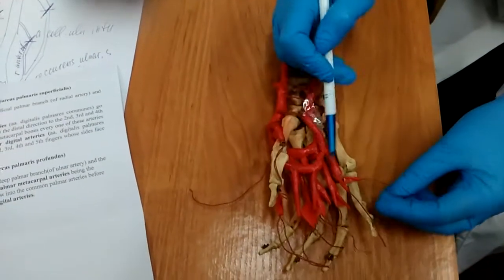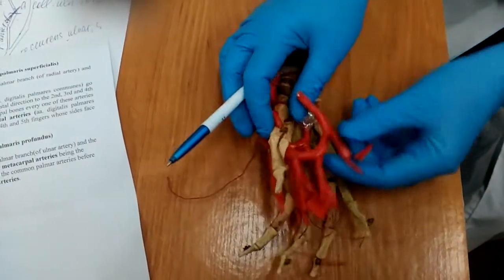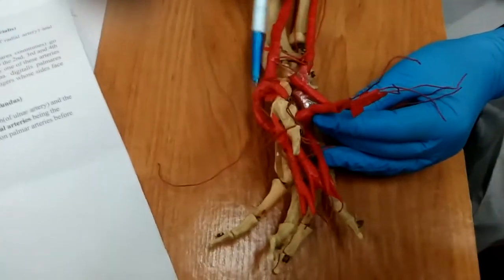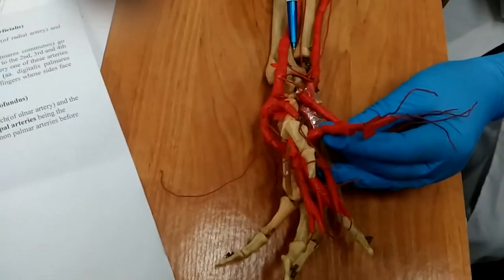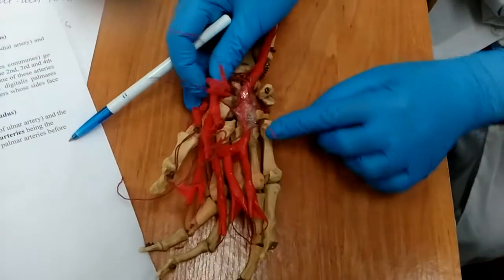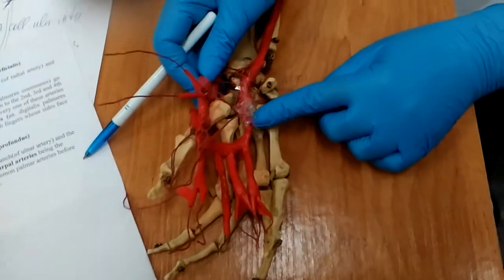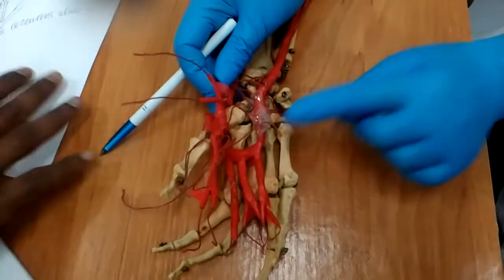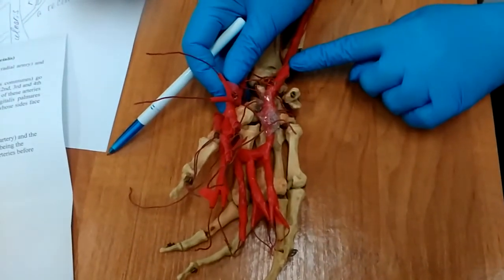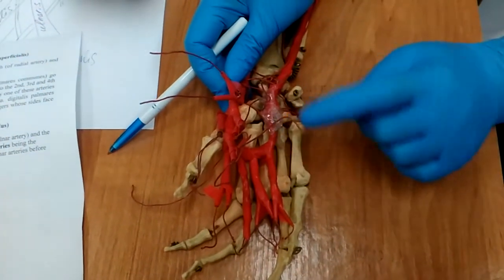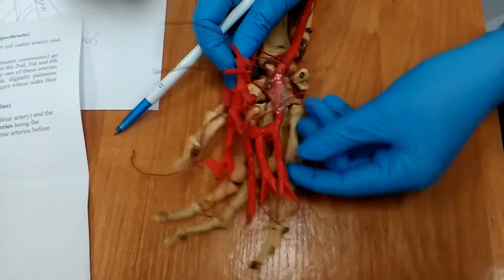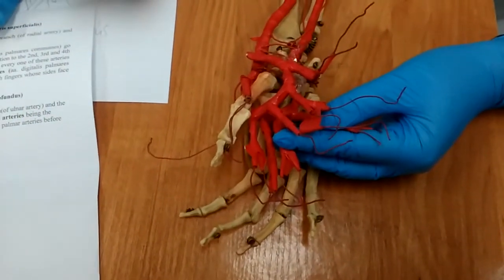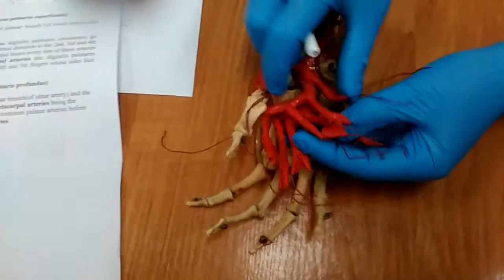This is the deep palmar arcus. This arcus is formed by the terminal end of the radial artery and the deep ramos, deep palmar ramos from arteria ulnaris. This arcus has palmaris metacarpal arteries.